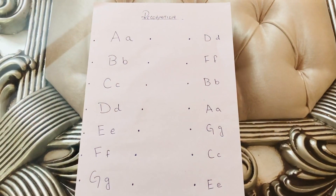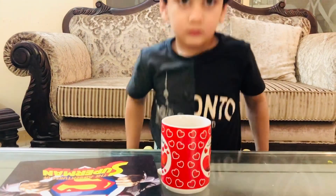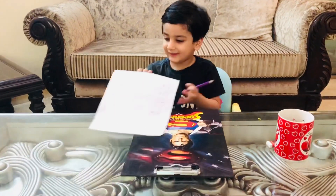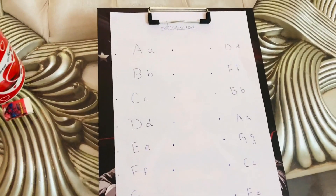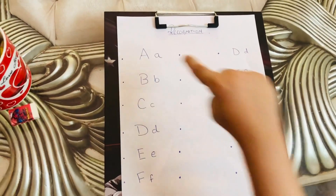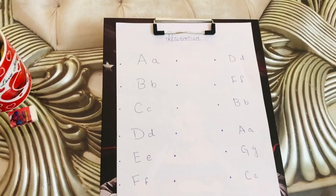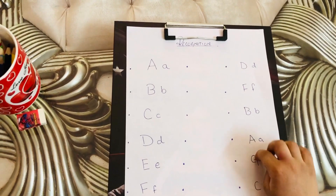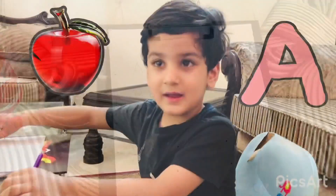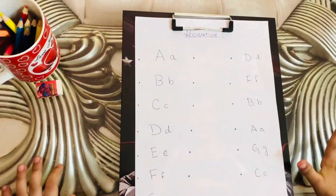Your first worksheet is about English. You have to recognize A, B, and C. Here is your first worksheet with capital letters and small letters. Now tell me where is A. Find A in the second list. What is A for? Apple! Now join — dot to dot.